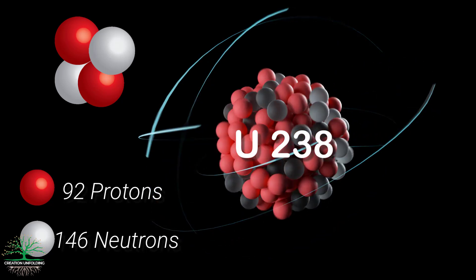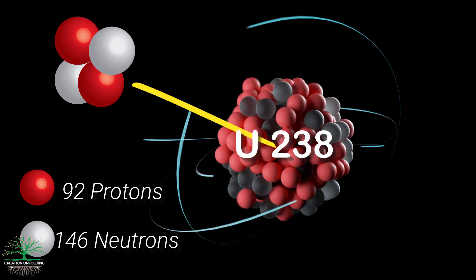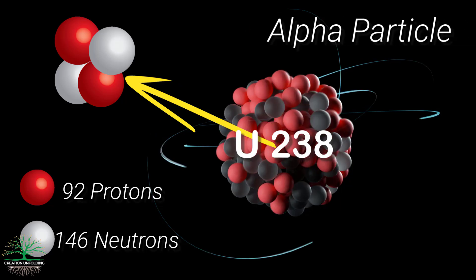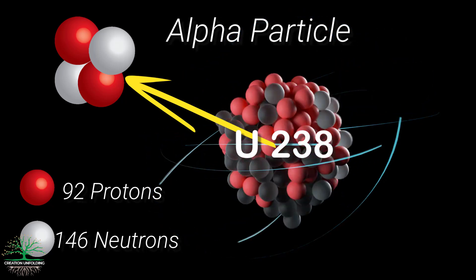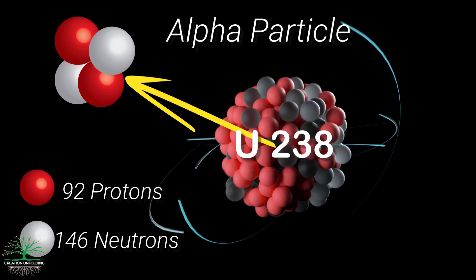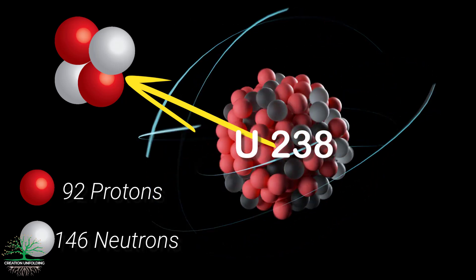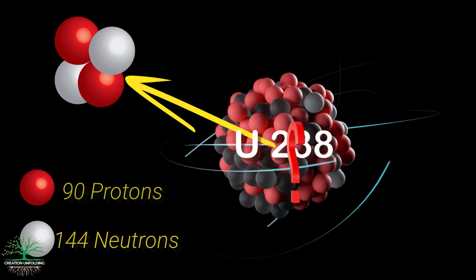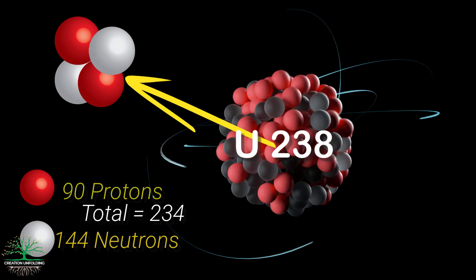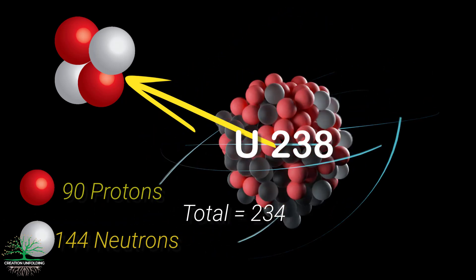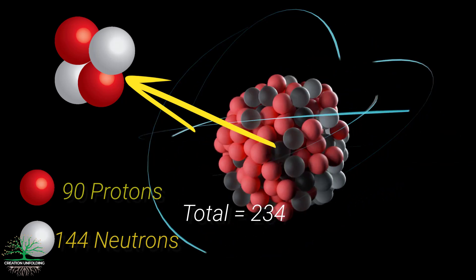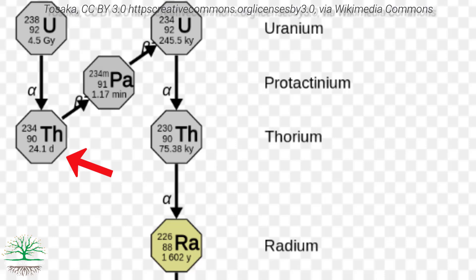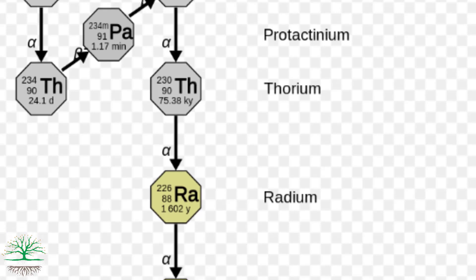In alpha decay, two of those protons and two of those neutrons break off from the nucleus. These four subatomic particles are called an alpha particle. When uranium-238 loses two of its protons and two of its neutrons, we can't call it uranium-238 anymore, because it now has 144 neutrons and only 90 protons — a total of 234. This new element is called thorium-234.